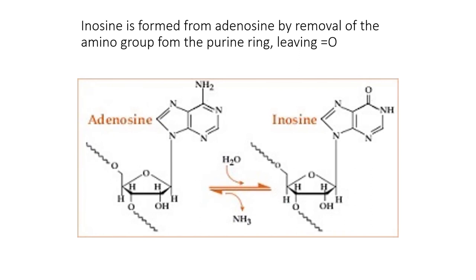Inosine is formed by removal of the amino group from the purine of adenine — the NH2 is deaminated, leaving a C=O at that position. The nucleoside is called inosine and the base is called hypoxanthine. Importantly, inosine has very different base-pairing properties from adenine, as you'd expect with the replacement of that amino group.